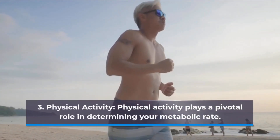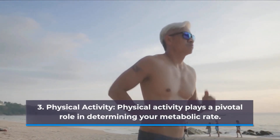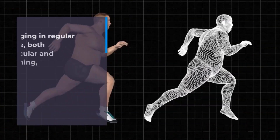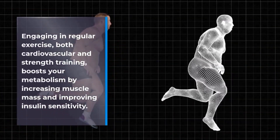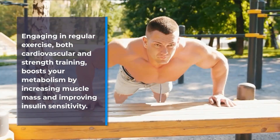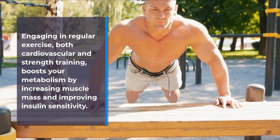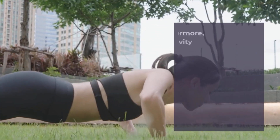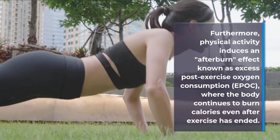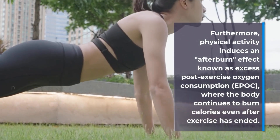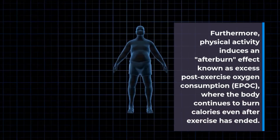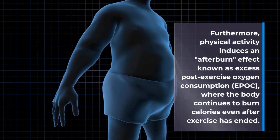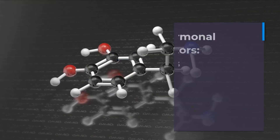3. Physical Activity. Physical activity plays a pivotal role in determining your metabolic rate. Engaging in regular exercise, both cardiovascular and strength training, boosts your metabolism by increasing muscle mass and improving insulin sensitivity. Furthermore, physical activity induces an afterburn effect known as excess post-exercise oxygen consumption (EPOC), where the body continues to burn calories even after exercise has ended.